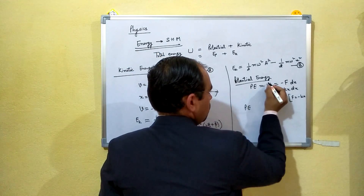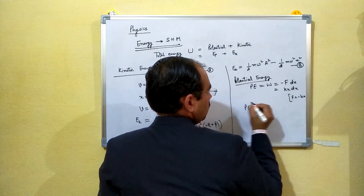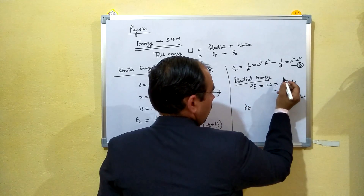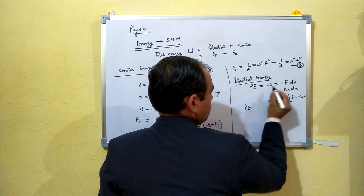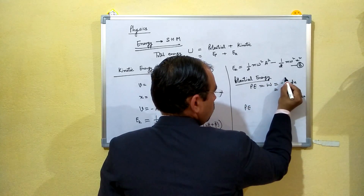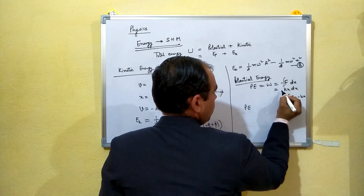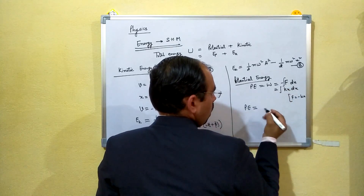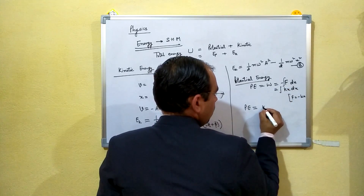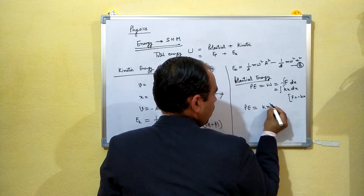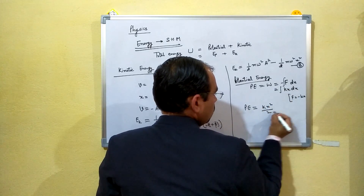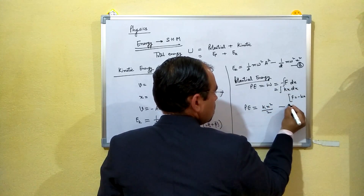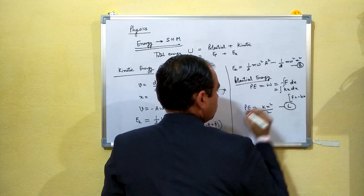Integrating kx·dx, we obtain the potential energy expression. This integration gives us the result.